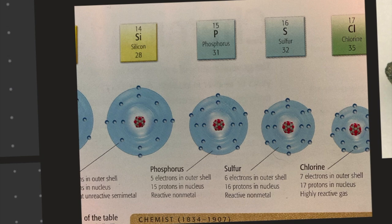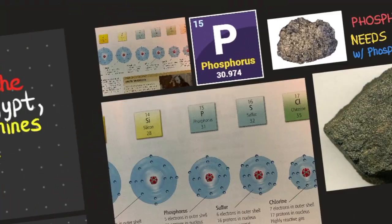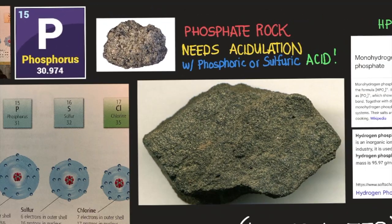That was the general overview and history of phosphorus. Let's continue. Phosphorus has five electrons in its outer shells and 15 protons in its nucleus. It's a reactive non-metal. The reason it's a non-metal is because it's in a transitory state between being a metal and a non-metal. A non-metal is simply an element that has high energy, and a metal is an element that has very low energy compared to the non-metal. Since it's in the transitory state, it has both the properties of a metal and a non-metal.